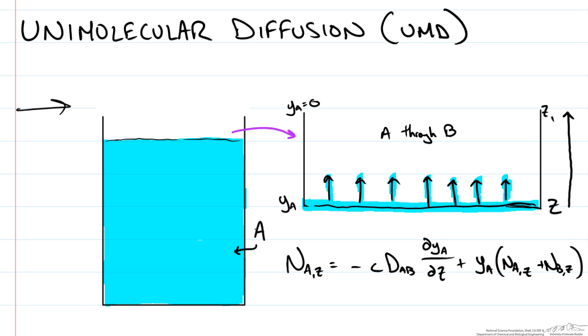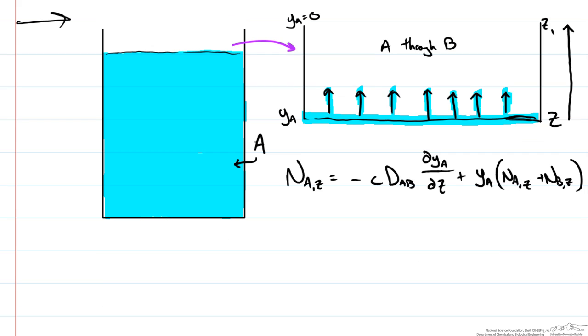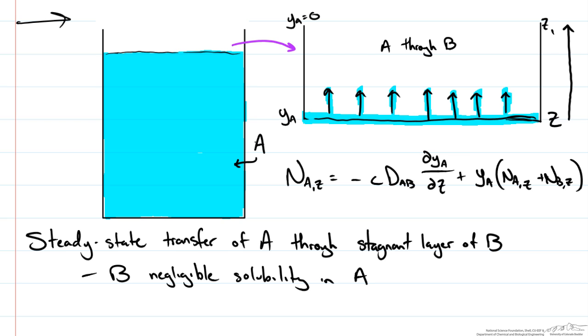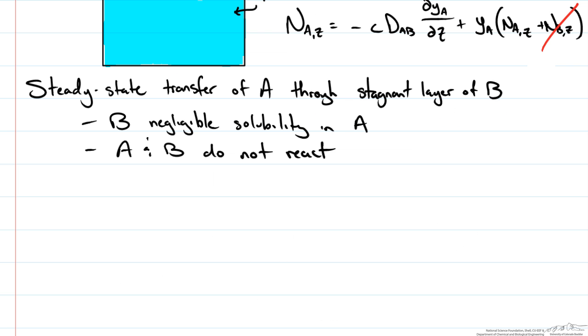So here is our constitutive equation that we're going to start with. If we look at the steady state mass transfer of A through a stagnant layer of B, and we're saying that B has negligible solubility in A and that A and B do not react, then we can reduce our system to where we have a flux of A, NAZ, but no flux of B since it's stagnant. That means we get to cross this term out. That leaves us with the following equation, and we can see mathematically that we do have that bulk flow term still and its effect.